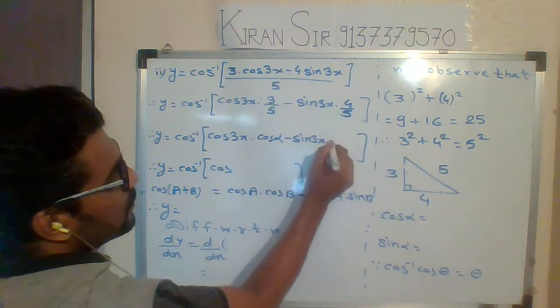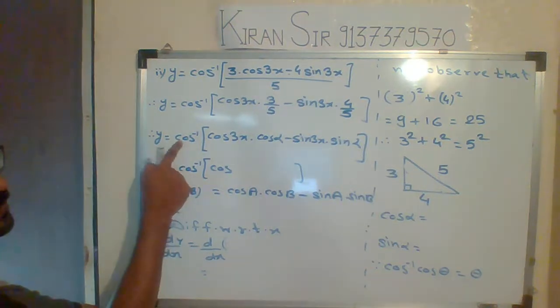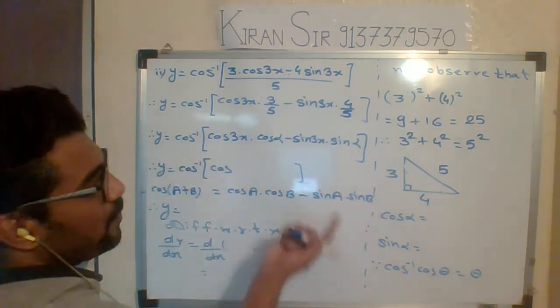And this 4 upon 5 I will write as sin α. Why sin and cos? Because there is a cos inverse behind. Next time I will take sin inverse, so that you have to be clear.